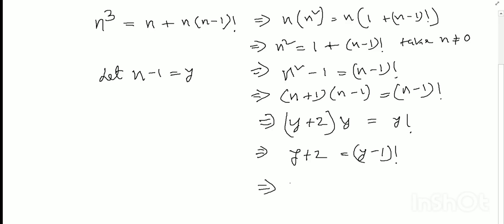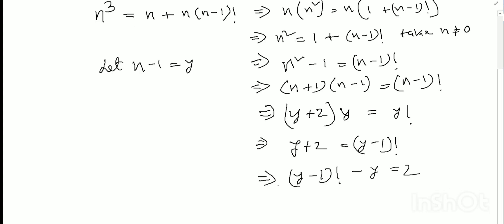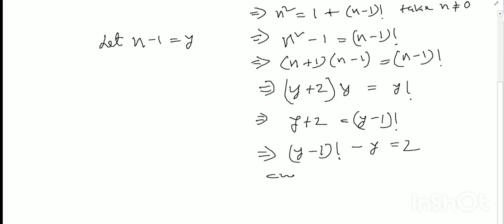So the equation becomes: (y minus 1) factorial minus y equals 2. Now let us check some values. Checking y equals 1: 0 factorial minus 1 does not equal 2.